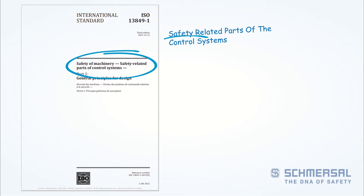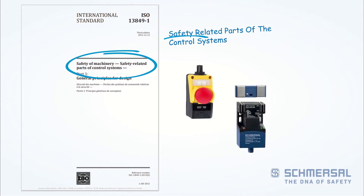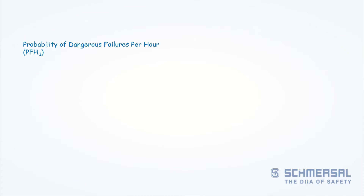A safety function can be that of an e-stop, a guard door interlock, or a hold-to-run enable device, for example. The standard looks at these safety functions and helps you determine how reliable it is against a dangerous failure.